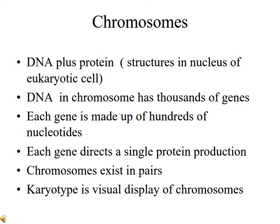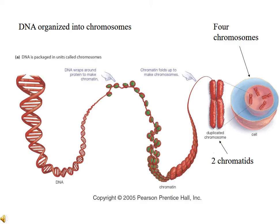In eukaryotic cells, all chromosomes exist in pairs. If we want to see chromosomes, we have to take cells and stain them in the right phase of cell division. When we do so, we get a karyotype, which is a visible display of chromosomes. So let's go forward and look at what chromosomes look like.